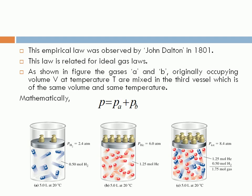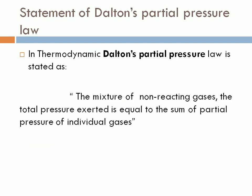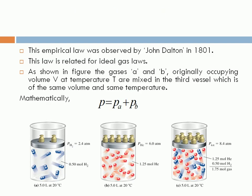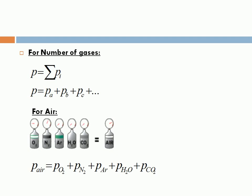What does Dalton's partial pressure law say? In a mixture of non-reacting gases, the total pressure is equal to the sum of the partial pressures of the individual gases. For more than two or three gases — up to P_n — if we talk about air, we consider gases like oxygen, nitrogen, water vapour, carbon dioxide, etc. So we write: P_air equals P_oxygen plus P_nitrogen plus P_water plus P_carbon dioxide, and so on.